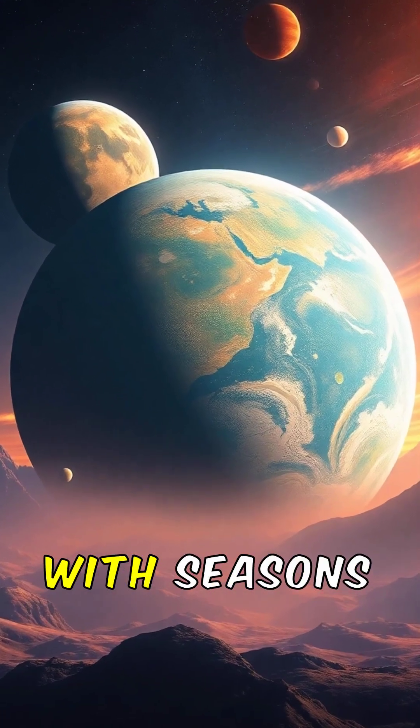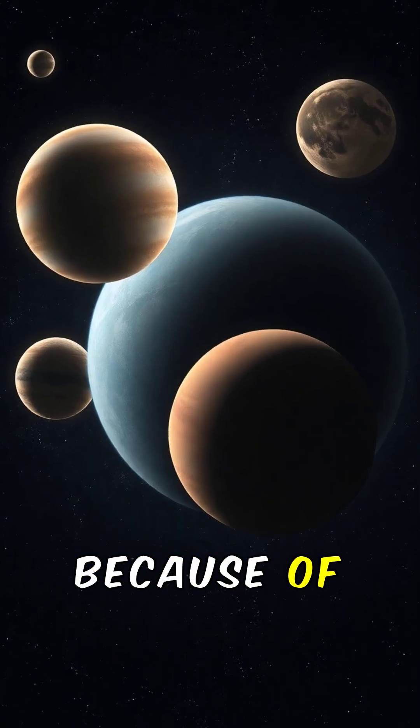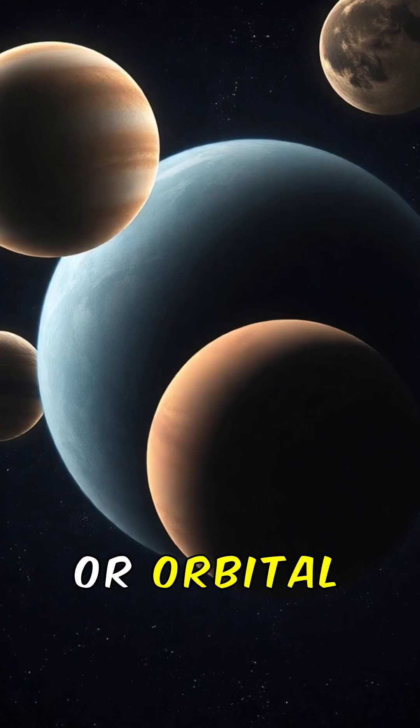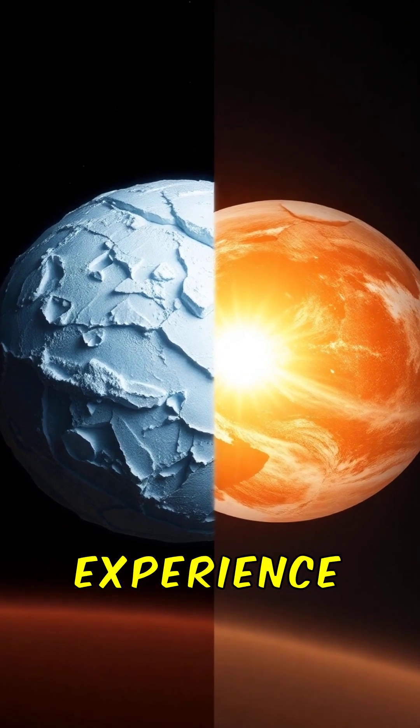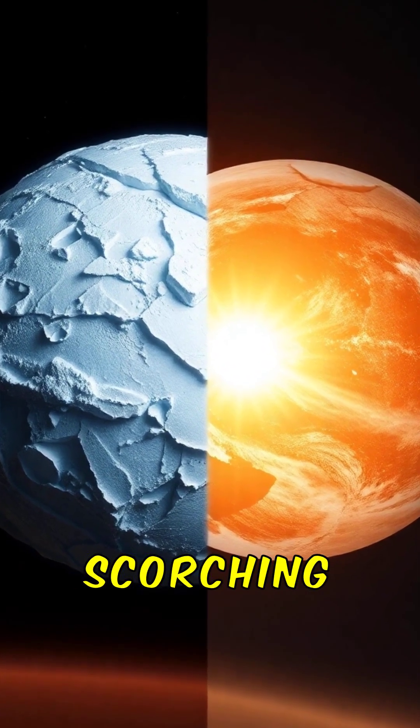We've found exoplanets with seasons that never end. Because of strange axial tilts or orbital locks, some planets experience eternal winters or permanent scorching summers.